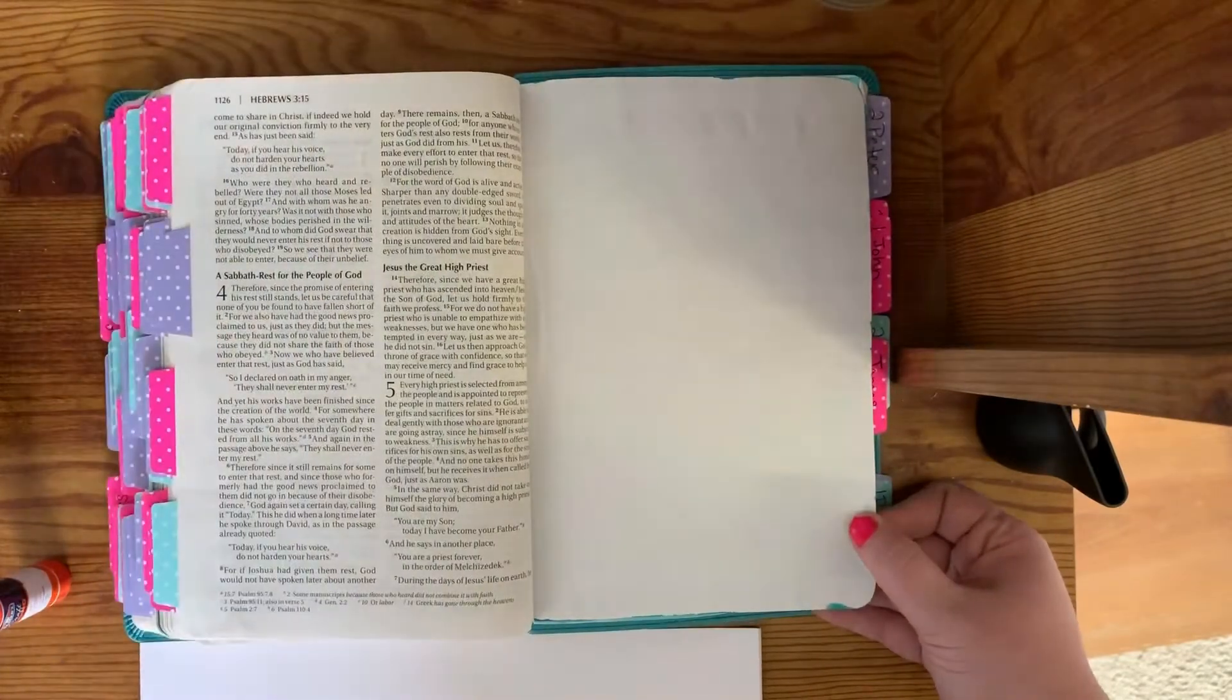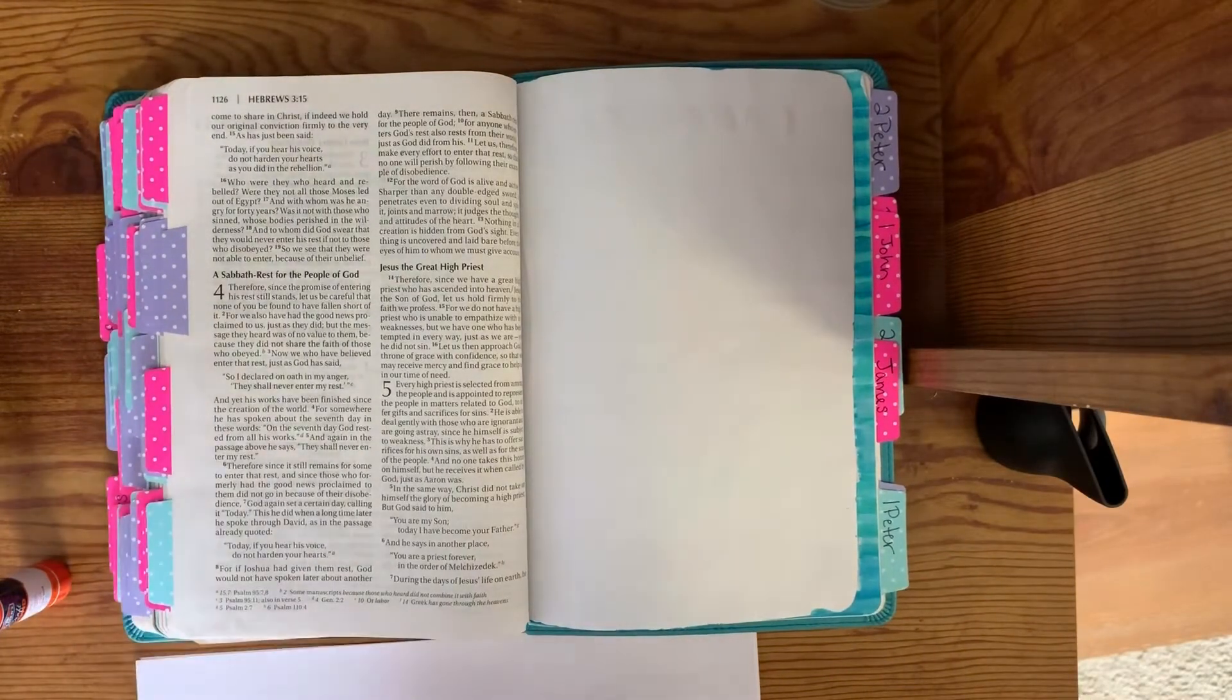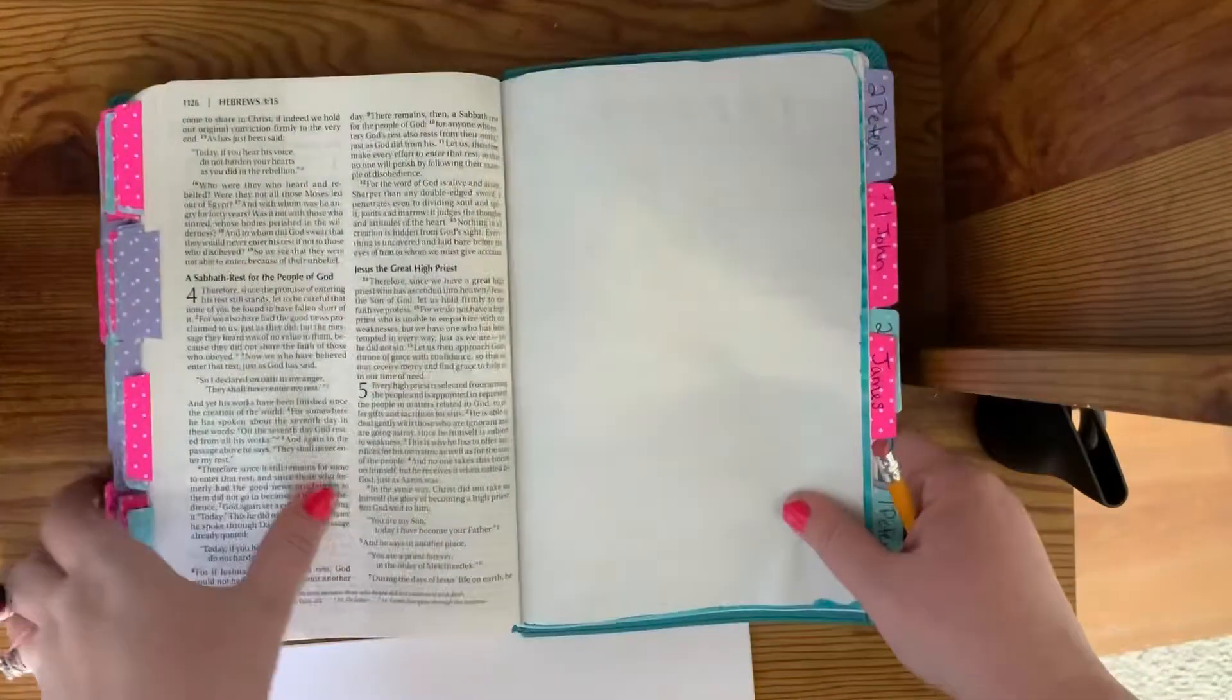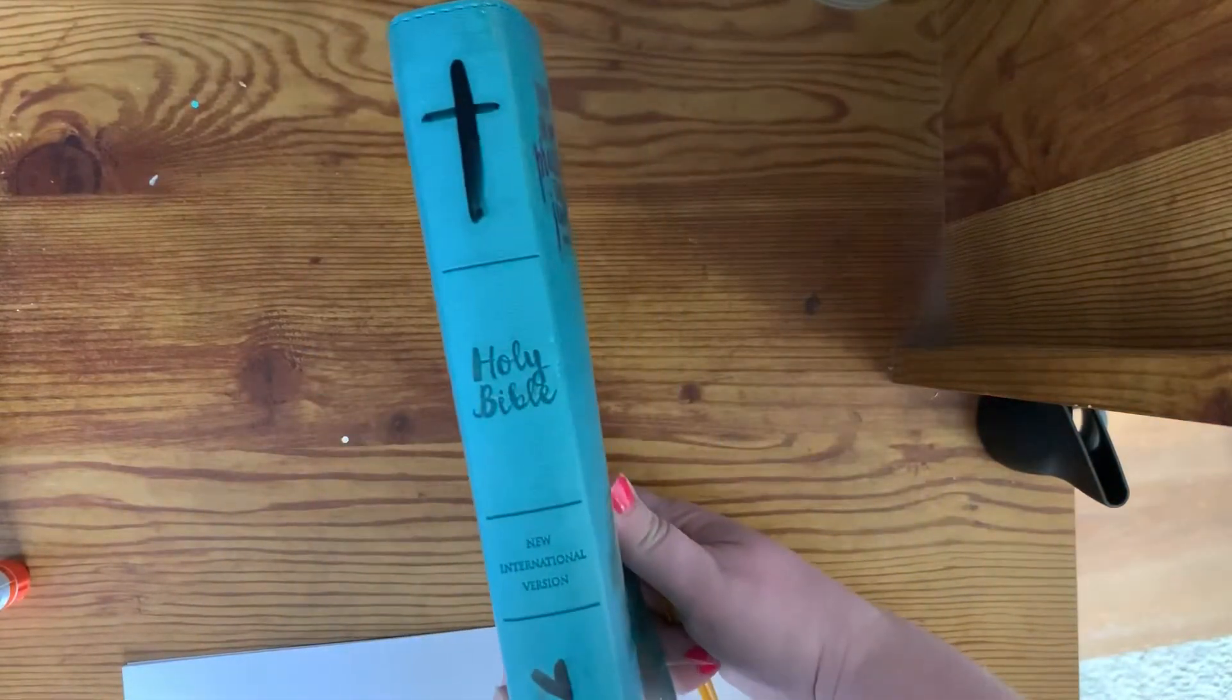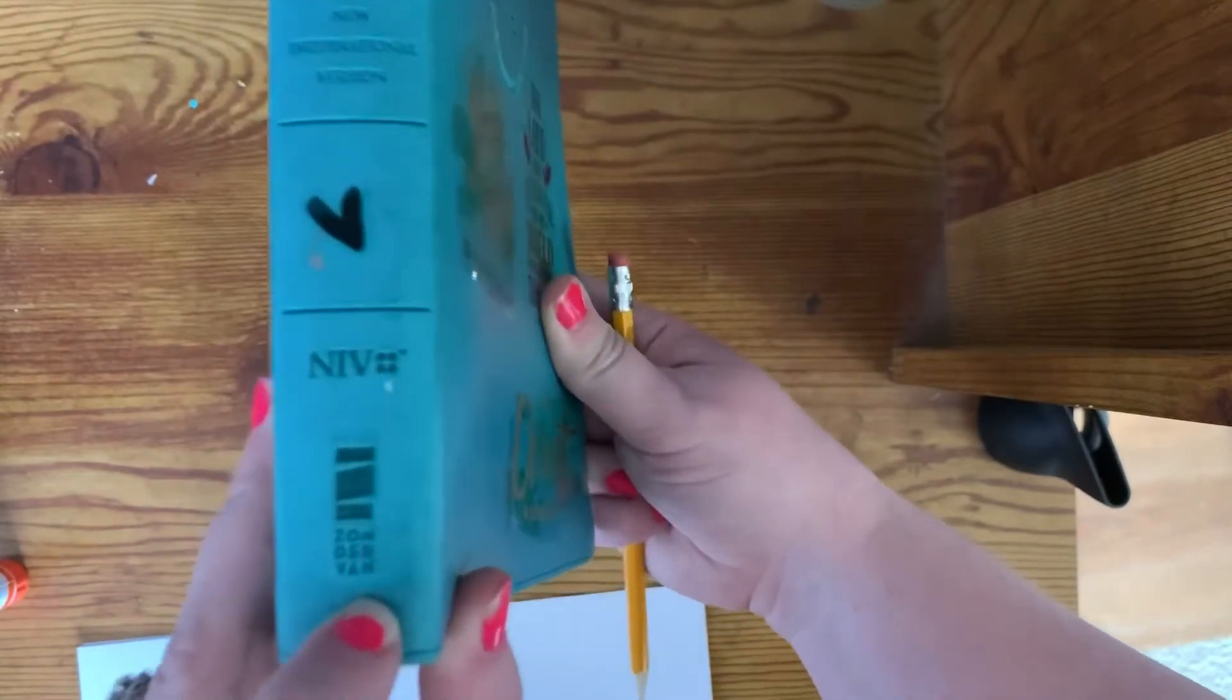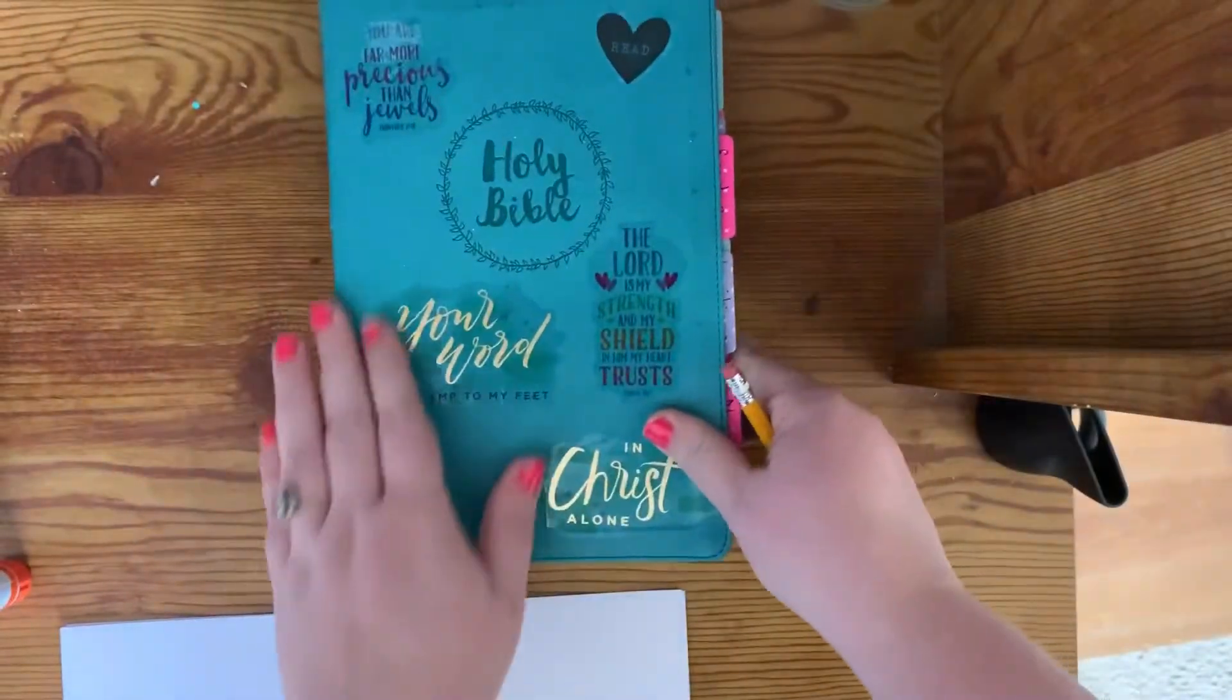To get started, you're going to need some type of marking utensil, something to write with, and the Bible that you're going to be adding the pages to. This one is the New International Version by Zondervan.